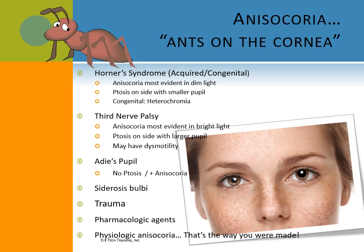Let's talk about some conditions that can cause anisocoria. Horner's syndrome can be acquired or congenital. Congenital is benign — no disease process is going on. Acquired is not benign; there is a disease process going on, and it's very important to never miss a Horner's syndrome. In Horner's syndrome you'll see an anisocoria, a ptotic lid on the side with the smaller pupil, and the anisocoria will be greater in dim light, with less anisocoria when the lights are on. Acquired Horner's syndrome can be caused by lung cancer, carotid artery aneurysms, or neck or chest trauma or surgery.